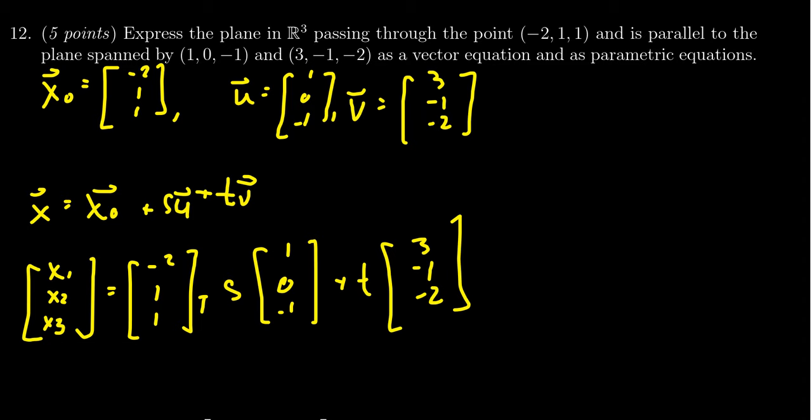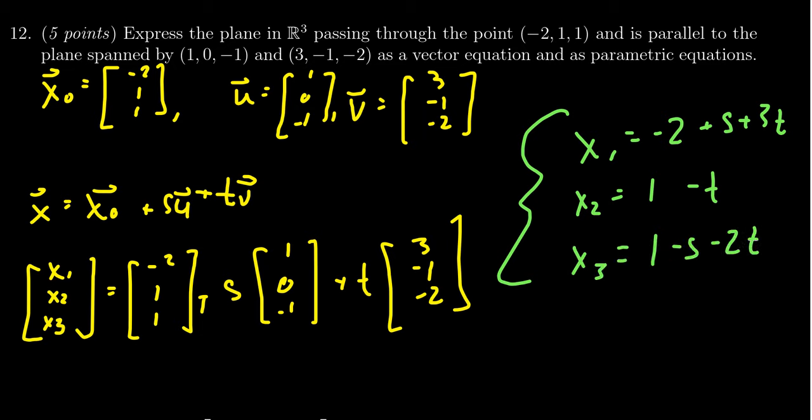The parametric equations then follow immediately from that. We get that X₁ equals -2 plus S plus 3T. X₂ equals 1 minus T, because you have a 0S, you don't see it there. And then X₃ equals 1 minus S minus 2T. And this will then give us the vector equation and the parametric equations for this plane in R³.